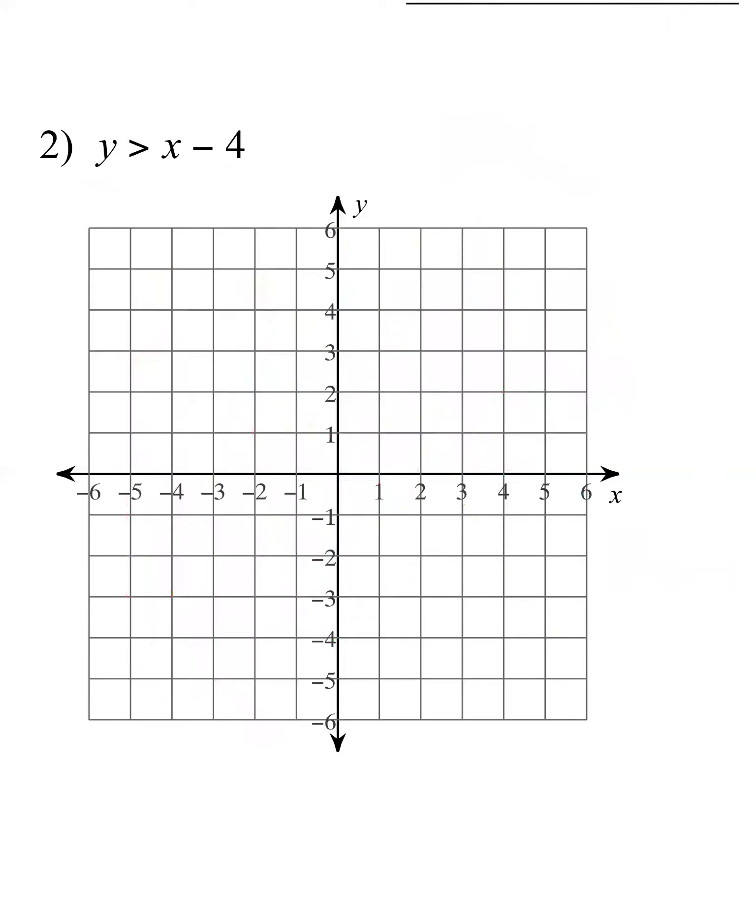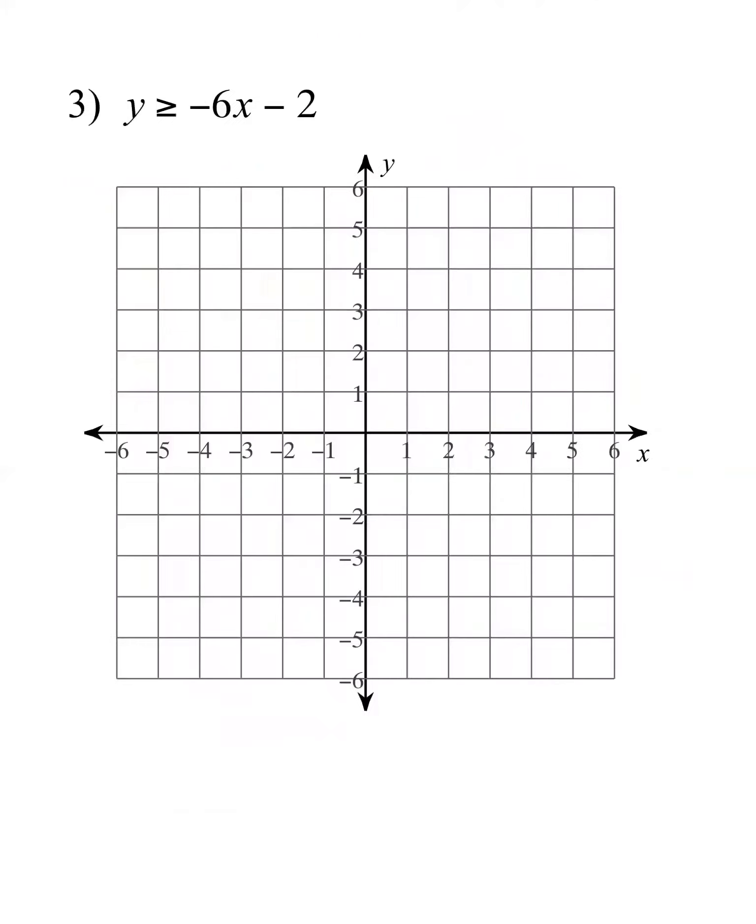Moving on to the next one, number 3. We're going to graph like normal. Let's start at negative 2, and then I need to follow my slope. In this case, down 6 over 1. So down 6 puts me off my grid by 2, but I'd be about there. So why don't I instead go up 6 and back 2? So there's my points. Am I going to use a solid or a dotted line in this case? Hopefully you're saying solid because I do have that bar underneath my inequality symbol.